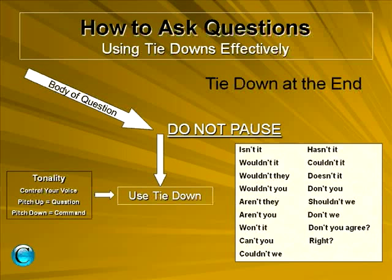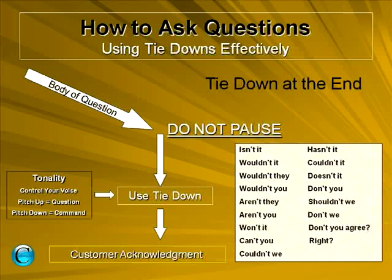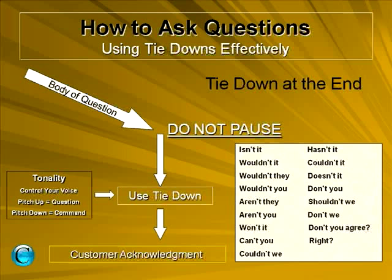So you've got the body of the question, you don't pause, you tie it down, and then we come to the customer acknowledgement — this is just the place where you be quiet and allow the customer to answer the question. With all high-quality questions and all high-quality sales, you don't want to talk over your customer or rephrase the question unless you need to. Give your customer the time they need to search for the answer because that answer gives you the next direction to go. We're looking for yes responses to build value, and with no responses we have an objection — now we have something to close on.